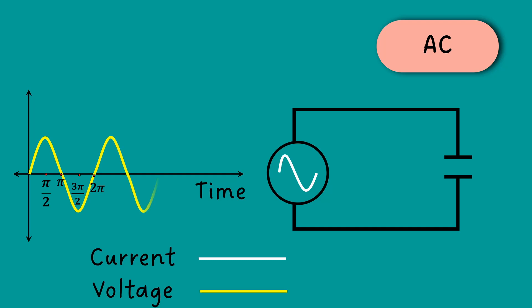When an AC supply is applied across a capacitor, it charges and discharges continuously. This behavior causes the current to lead the voltage by 90 degrees.